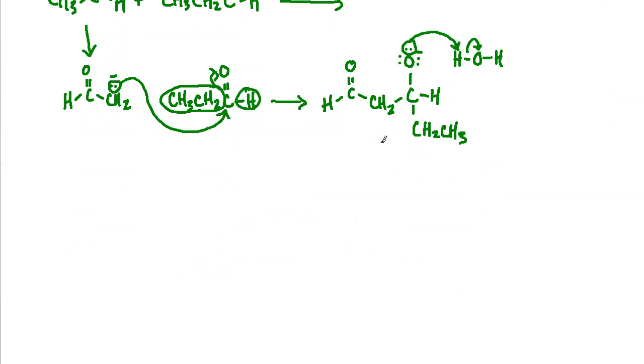So water has formed. And as we saw last time in the self-condensations, we can come and grab a proton from the water, regenerate the hydroxide. And so the result here would be the aldol, which is the aldehyde and the alcohol. That is one of the products that we would get from the mixed aldol condensation.